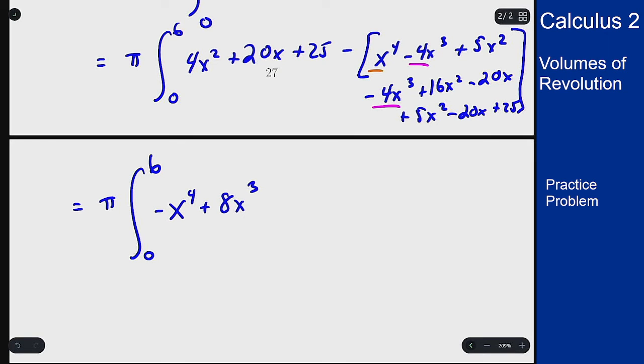On x squareds I see 4 of them here, and then plus 5 plus 5 plus 16. The 26 negative 26 is minus 22 in total. For x's I have 20, 20, and 20.